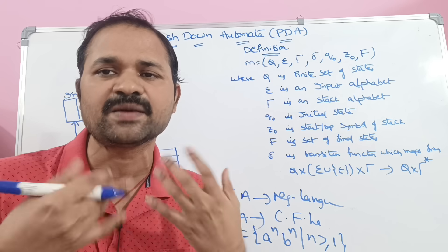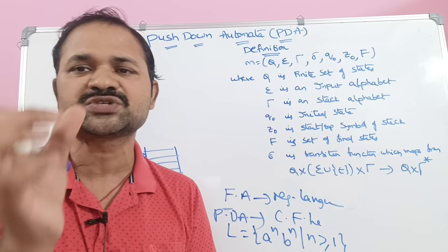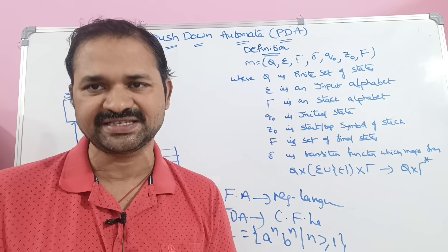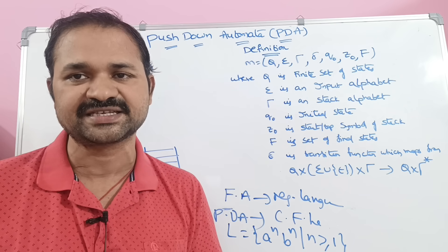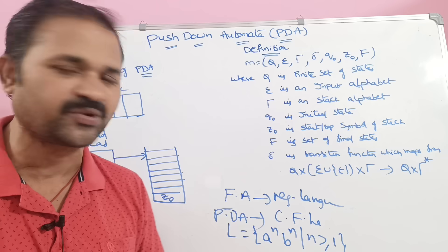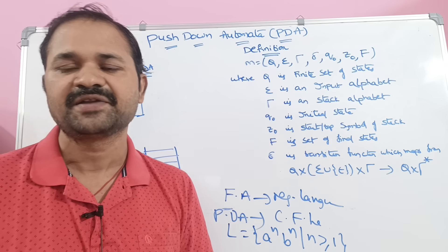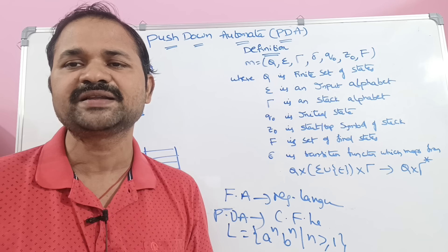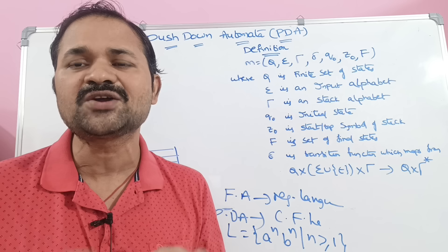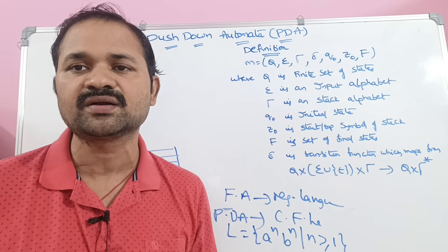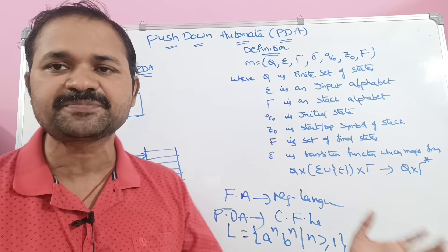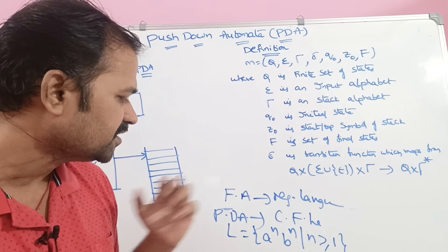Finite automata has a finite amount of memory and can store only a limited piece of information. If we want to handle some complex languages, then it is not possible with finite automata. The best example is this one — we need some comparison mechanism where the number of A's and number of B's must be equal, but that comparison mechanism is not there in finite automata. So if we want to handle complex languages, we have to go for context-free languages, which are recognized by pushdown automata.